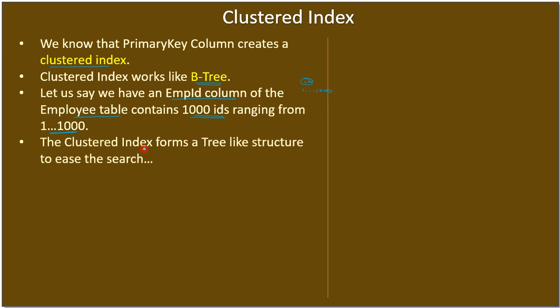The clustered index forms a tree-like structure to ease the search, making data retrieval quicker. However, it has the adverse effect of slowness in insert, update, and delete operations, because those operations need to revisit and adjust the B-tree structure. Now let's look at the picture of the clustered index for this specific example — we will assume that a user created a primary key column for emp_id in the employee table.